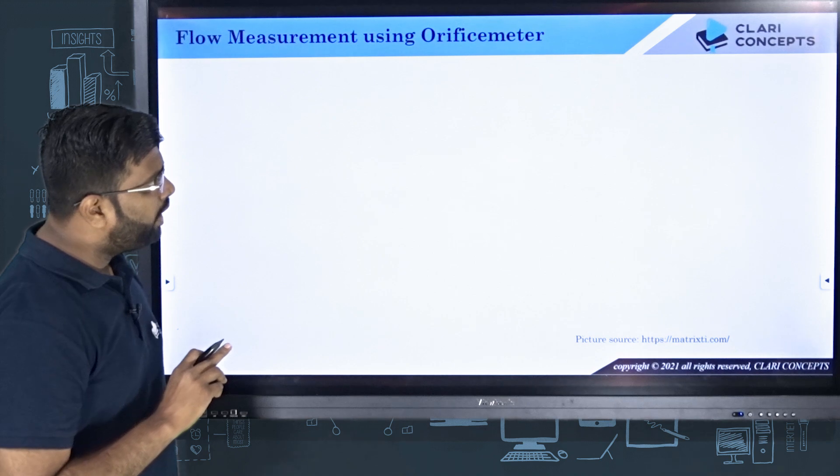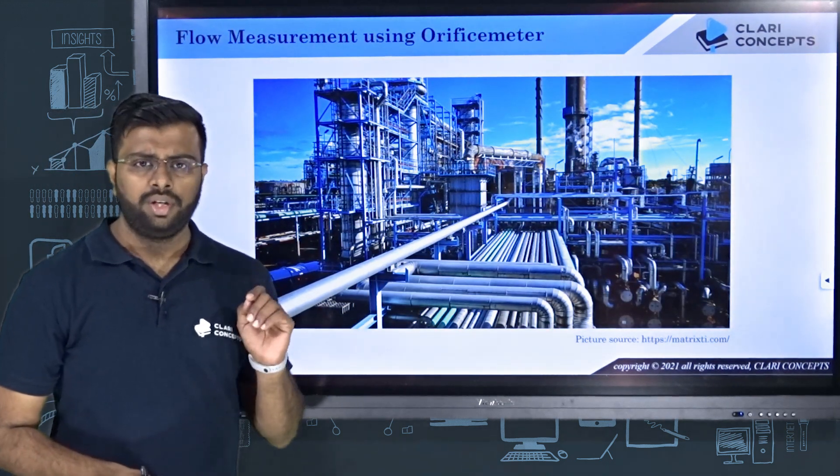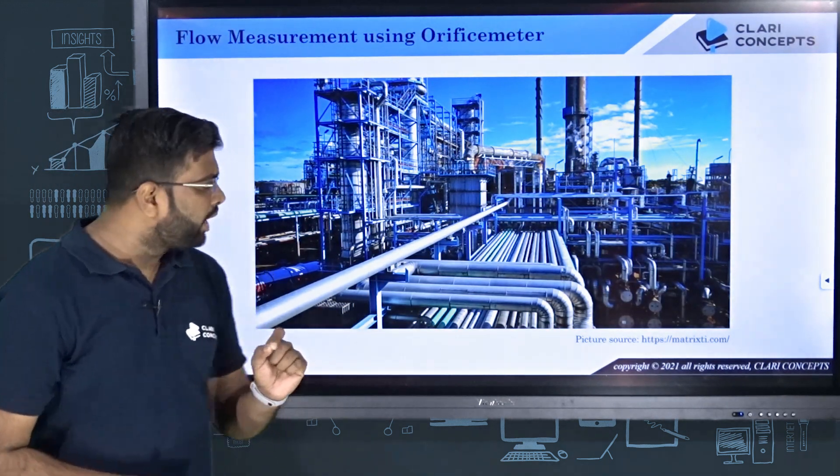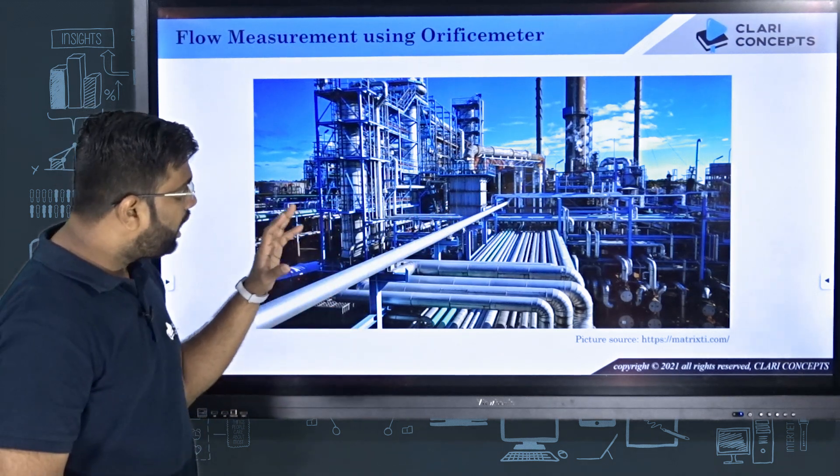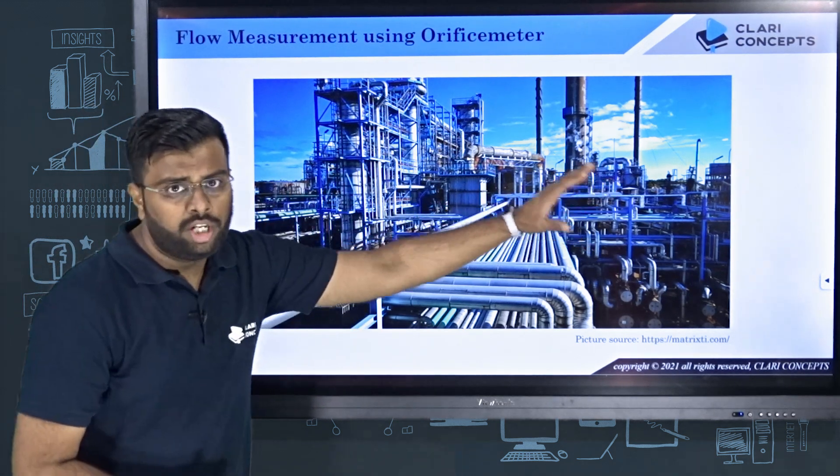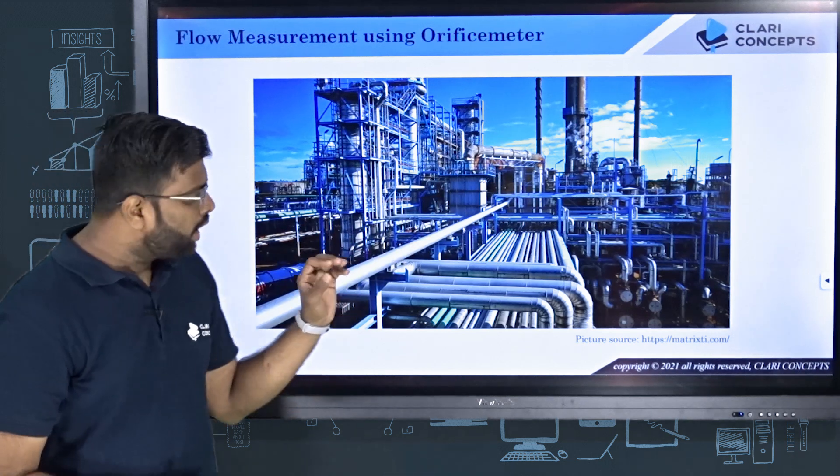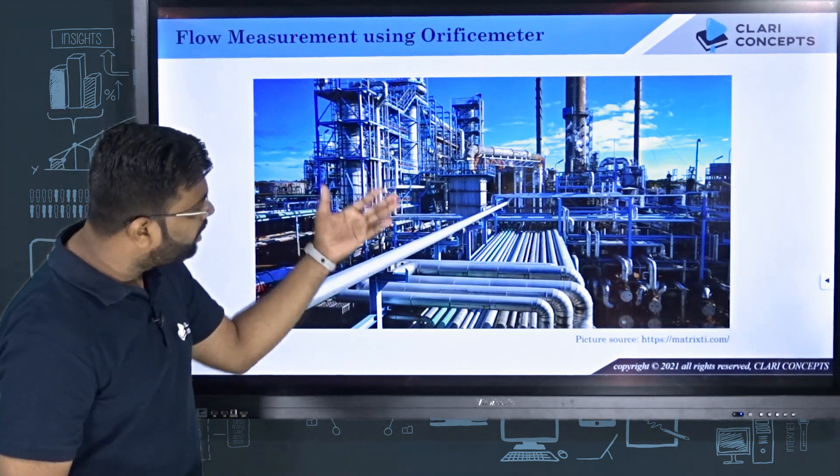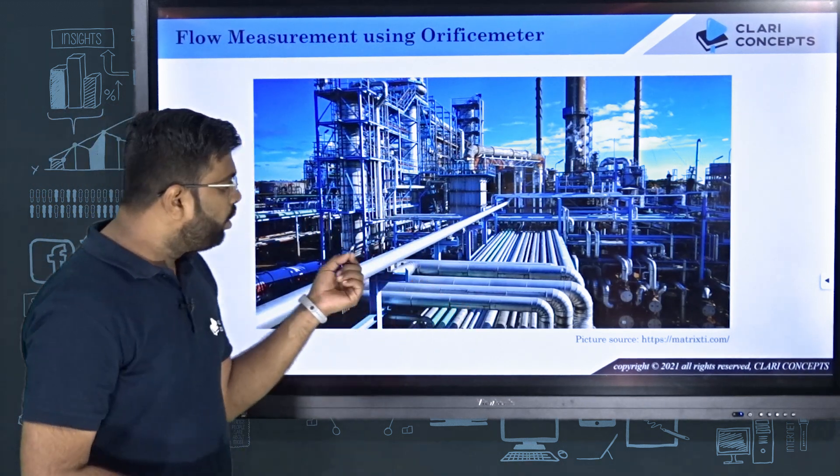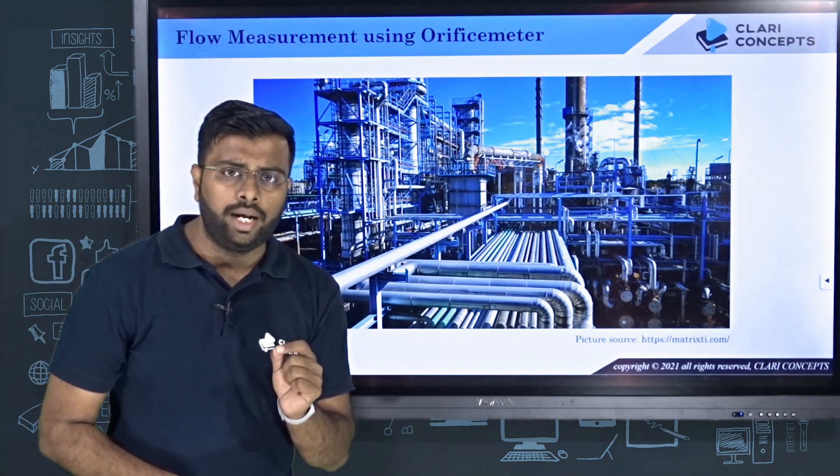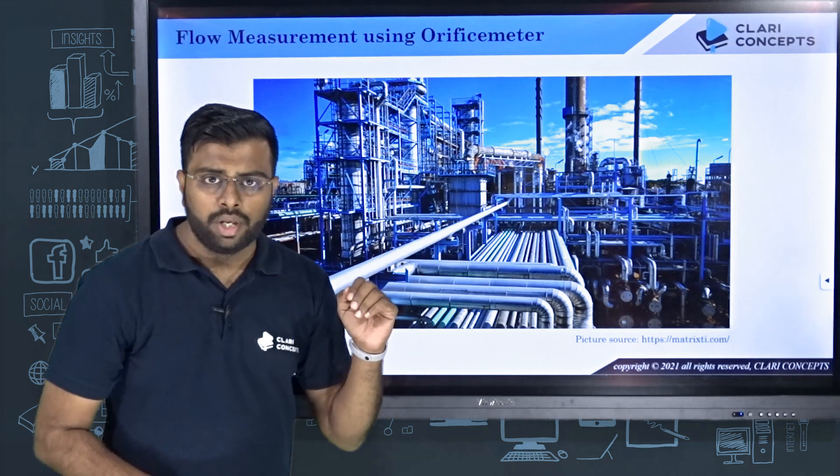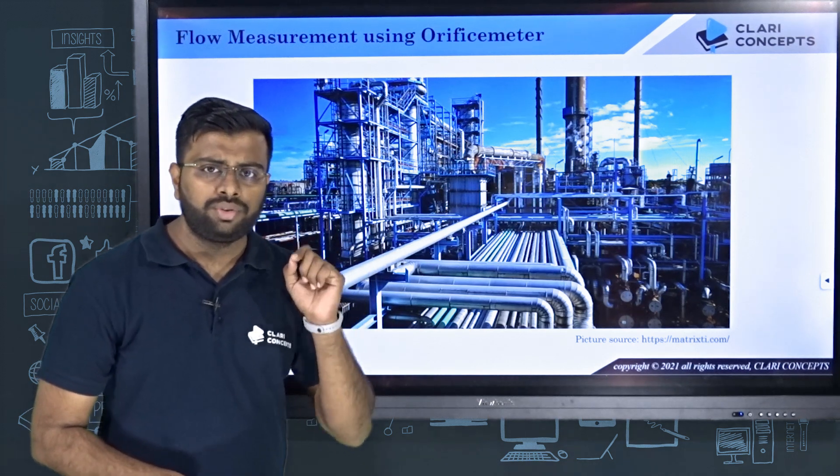Suppose you have an industrial network. In most of the process industries, there are many piping networks with fluids traveling from one location to another location in a pipe network. As an engineer, you must make sure that a perfect quantity of fluid at a perfect rate is flowing through a particular pipe.